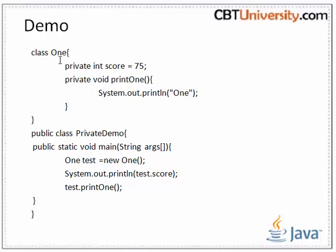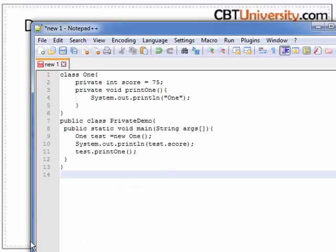Let us take a demo. We are defining a class one which has a variable and a method declared as private, and we have a class private demo. In this we are calling this class and its members. The score and print one are defined as private, so let us compile and see.